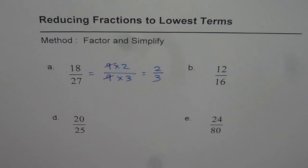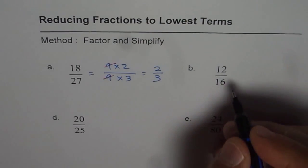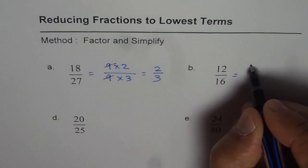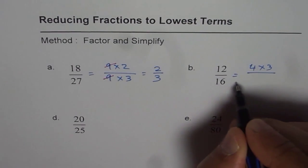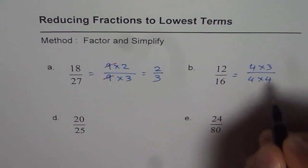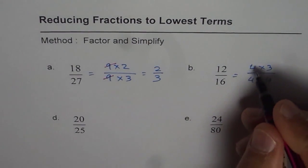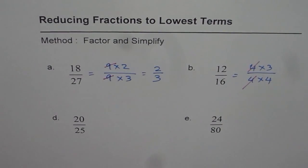Let's do 12 over 16. I've taken the easy ones for myself. 12 is 4 times 3, and 16 is 4 times 4. Reducing fractions means canceling out the common factors.